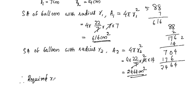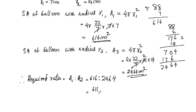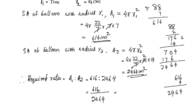The required ratio is A1 to A2, which is 616 to 2464. Dividing both by 616: 616 divided by 616 is 1, and 2464 divided by 616 is 4. So the ratio is 1 is to 4.